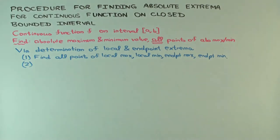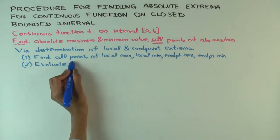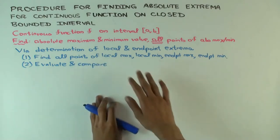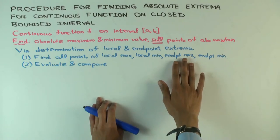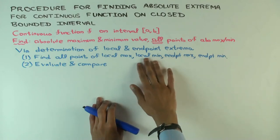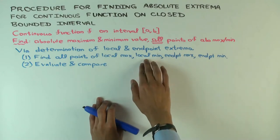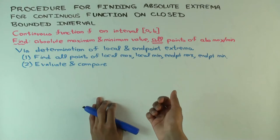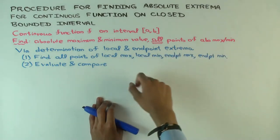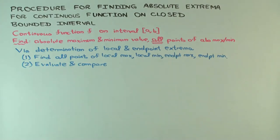Now, how do you figure out within these candidates which one is right? Compare the values — evaluate at all these points and compare. For the max, you just look at the local max and endpoint max candidates and take the maximum of those values. If your goal is only to find the absolute min, you just evaluate at the local min and endpoint min candidates. The largest value gives you the absolute maximum value, and all points where that value is attained are the points of attainment. Similarly, the smallest value gives you the absolute minimum.